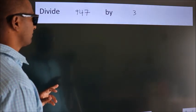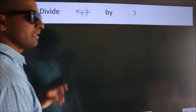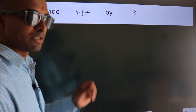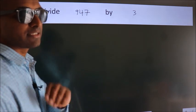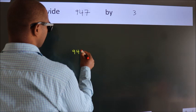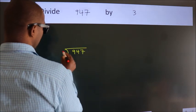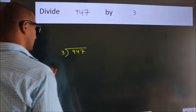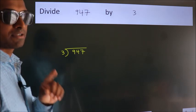Divide 947 by 3. To do this division, we should frame it in this way. 947 here, 3 here. This is your step 1.